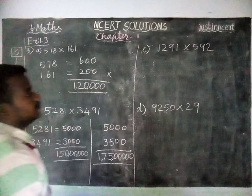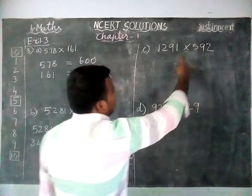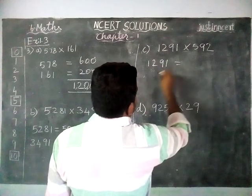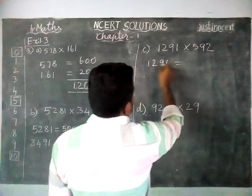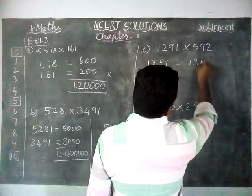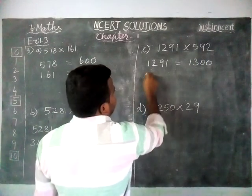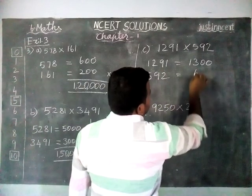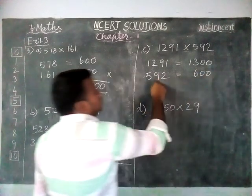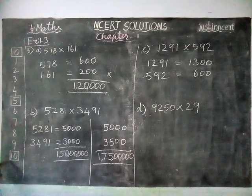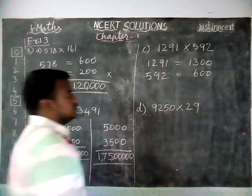We are going to round off to nearest 100. We will get 1300. And this number, 592, when we round off to nearest 100, we will get 600, because the 10's place is 9. When the 10's place is 9, we choose the next number, which is 600.